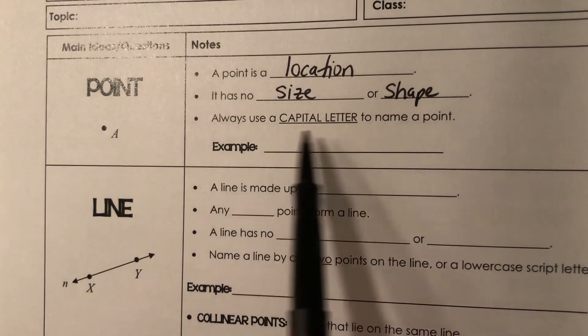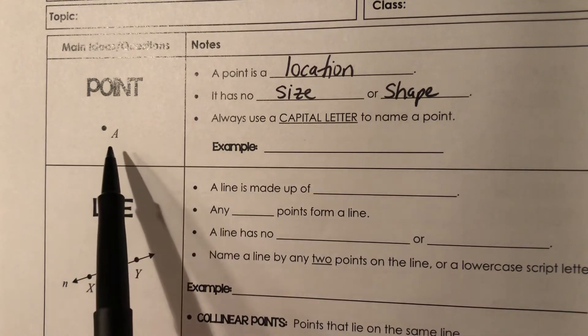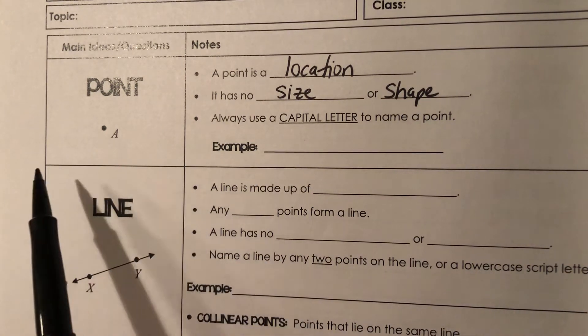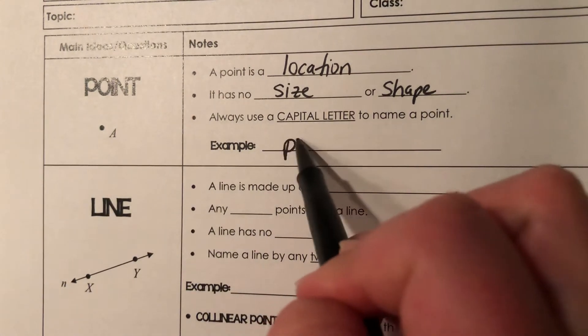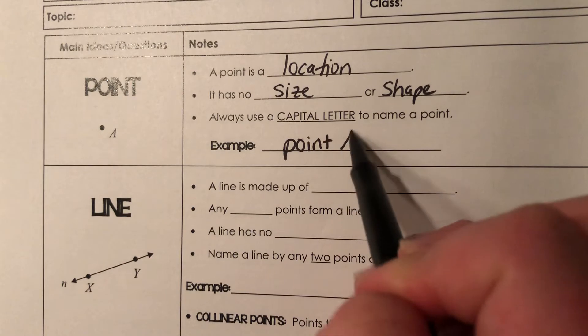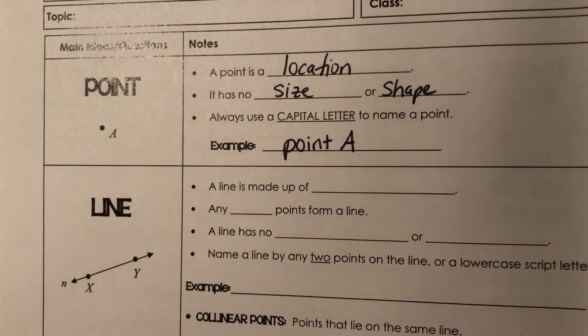We always denote it with a capital letter. So in this one, we have a capital letter A. So for example, how you refer to this one, you call it point A. So if you wanted to write that, you would say this is point A or whatever capital letter ends up being by it.